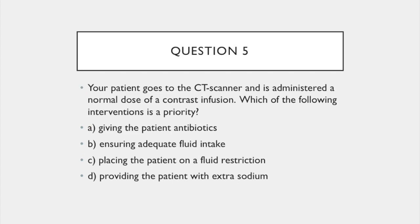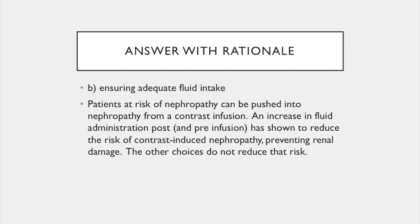Question 5. Your patient goes to the CT scanner and is administered a normal dose of contrast infusion. Which of the following interventions is a priority? A. Give the patient antibiotics. B. Ensuring adequate fluid intake. C. Placing the patient on a fluid restriction. Or D. Providing the patient with extra sodium. The answer is B: ensuring adequate fluid intake. Patients at risk of nephropathy can be pushed into nephropathy from a contrast infusion. An increase in fluid administration pre- and post-infusion has been shown to reduce the risk of contrast-induced nephropathy, thus preventing renal damage. The other choices do not reduce that risk.